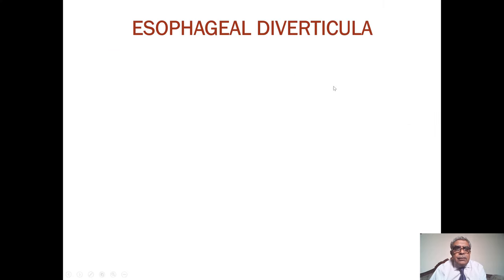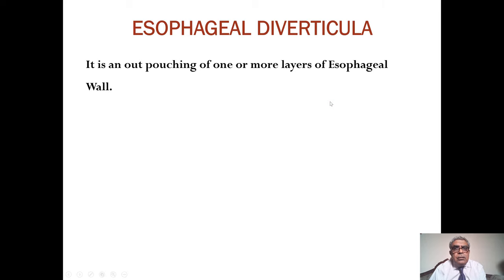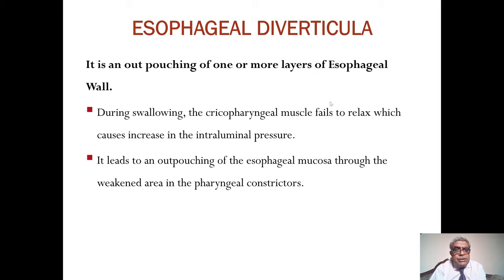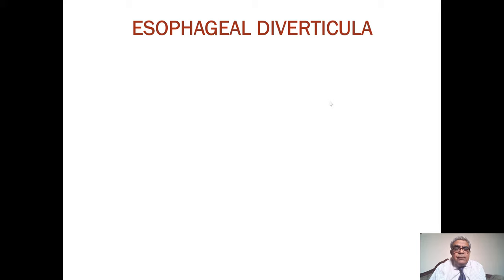Now we are going to discuss another important topic, which is esophageal diverticula. Diverticula or diverticulum is defined as an outpouching of one or more layers of the esophageal wall. During swallowing, the cricopharyngeal muscle fails to relax, which causes an increase in the intraluminal pressure. This leads to an outpouching of the esophageal mucosa through the weakened area in the pharyngeal constrictors.